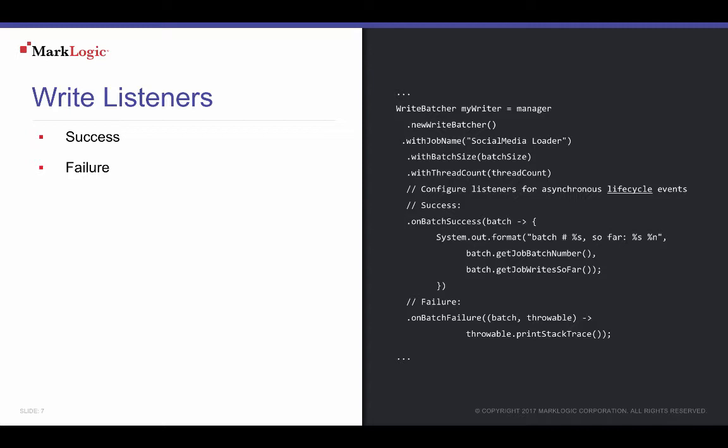WriteBatchers are used to write content to the MarkLogic database. Each batch is a transaction, and developers can choose the size of these batches along with a number of job threads to launch to process the batches. WriteBatcher listeners are callback functions provided to handle notifications returned from job threads. WriteJobs notify listeners of the success or failure of each batch.